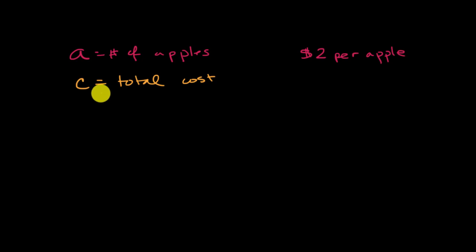There's several ways that we can express the relationship between the total cost and the number of apples. One way is if we solve for the total cost and we say, okay, the total cost is going to be $2 per apple times the number of apples. So it's going to be 2A.